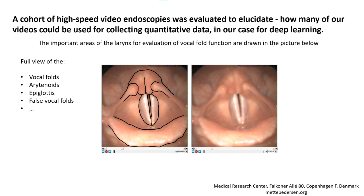It was necessary to identify which areas of the larynx should be fully visible in the recordings. The list included the vocal folds, arytenoid region, epiglottis, and the false vocal folds, with room for others to be added. The images shown are examples of a recording with the identified areas fully visible. Some of the areas are outlined for representation purposes.